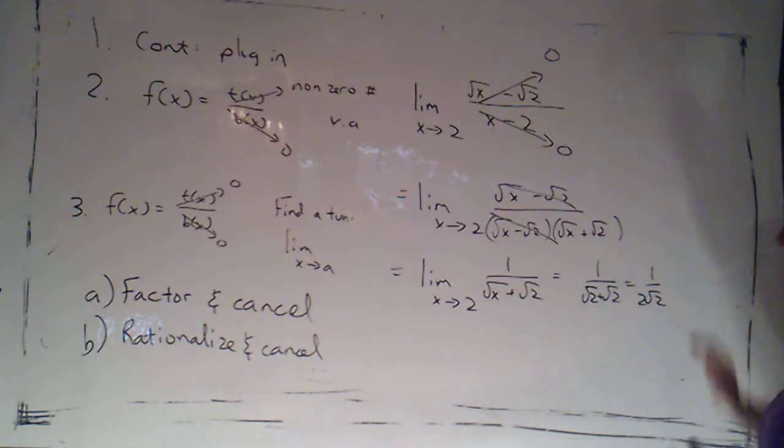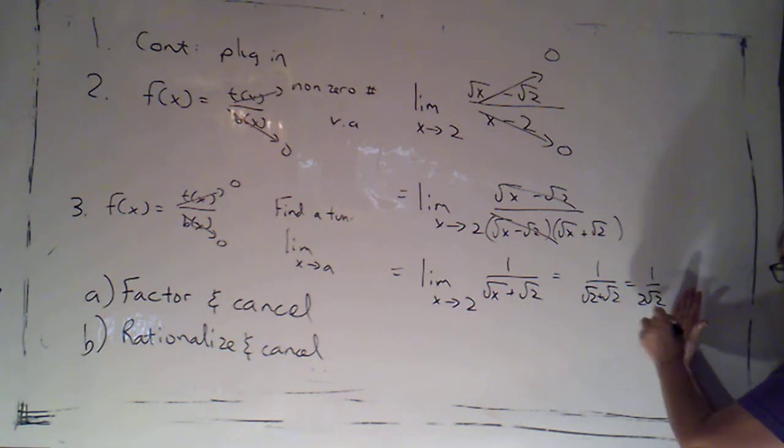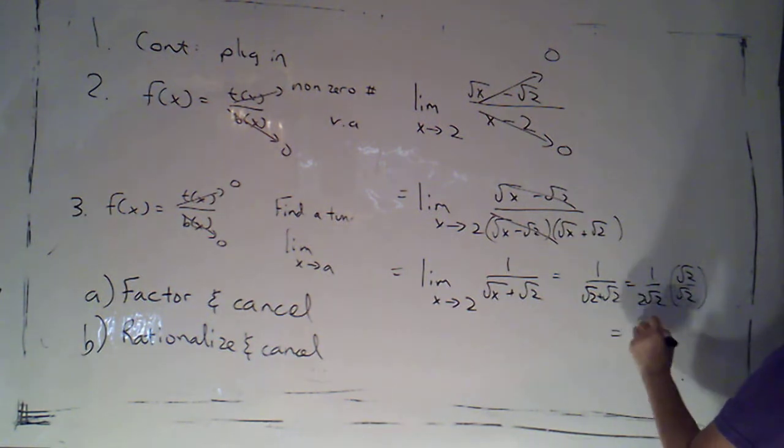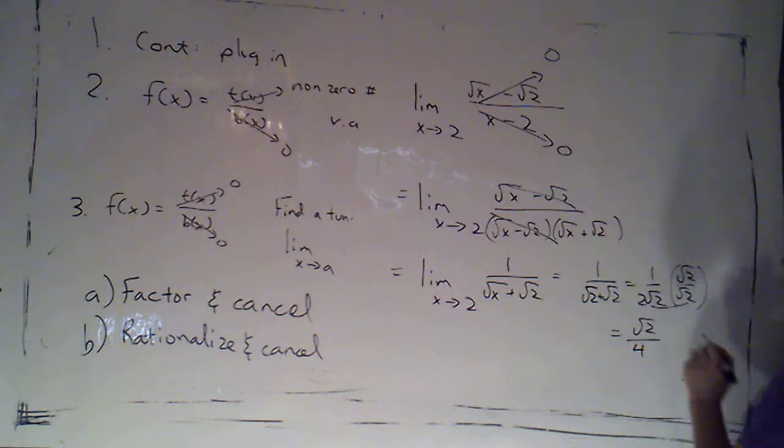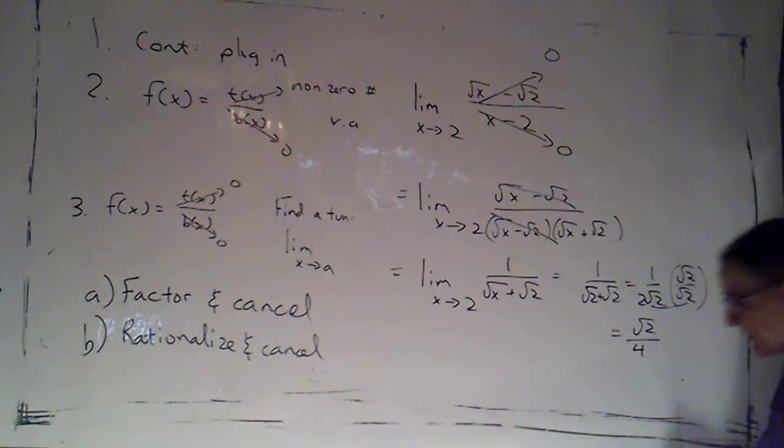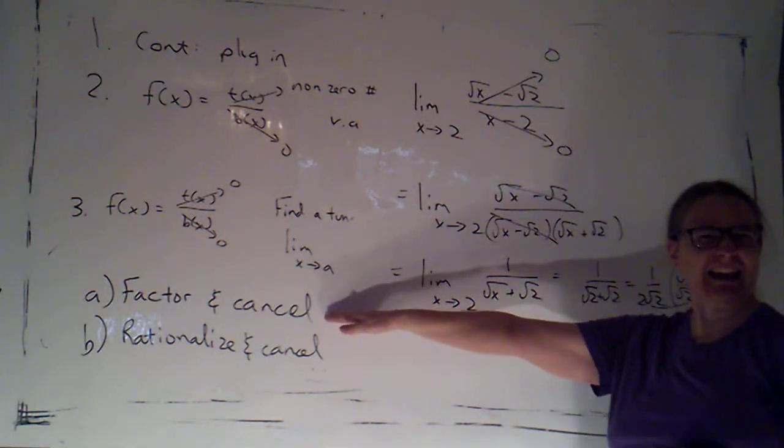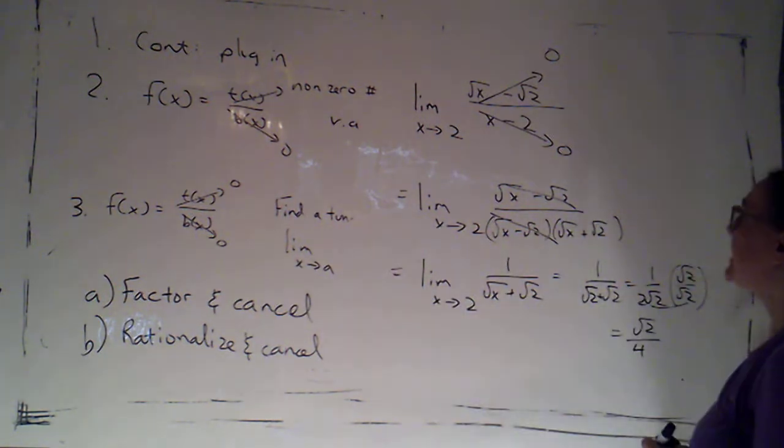I'm not going to be picky this semester that you necessarily rationalize your denominators. But we certainly could. If I did, this would just become root 2 over 2 times another 2 is 4. So that's an option. That's actually doing the factoring and canceling. Some of you might like that, but some of you might say, you know what, I look at x minus 2 and I'm just not thinking factoring.